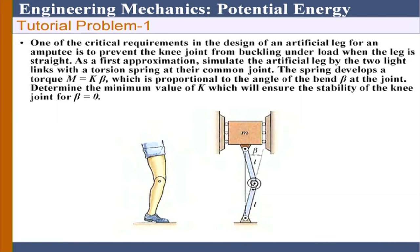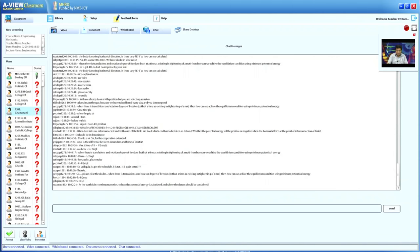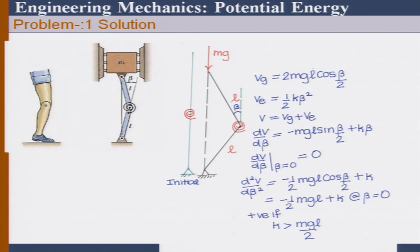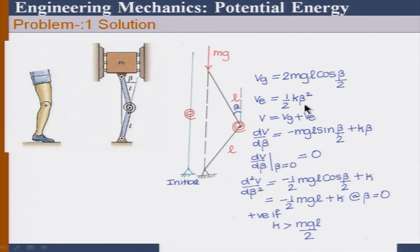K should be greater than MgL divided by 2, and many of the remote sensors are posting the solution now. So look at the solution carefully: first we calculate the potential energy of the mass, and then we have the potential energy of the rotational spring, which is ½Kβ². The only thing is that ½Kx² has x replaced by theta, which is beta here. We then find the total potential energy and do dV/dβ = 0. Indeed, beta = 0 is an equilibrium configuration.